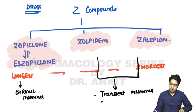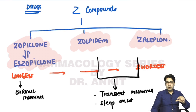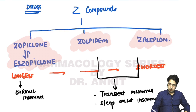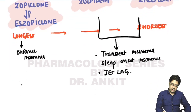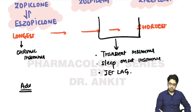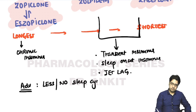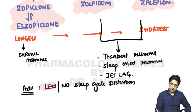Zolpidem and zaleplon are used in transient insomnia and sleep-onset insomnia — when a person has trouble initiating sleep but no problem afterward. They are also used in jet lag.